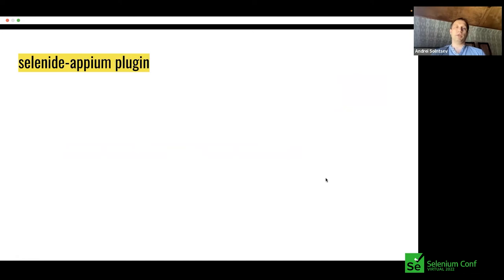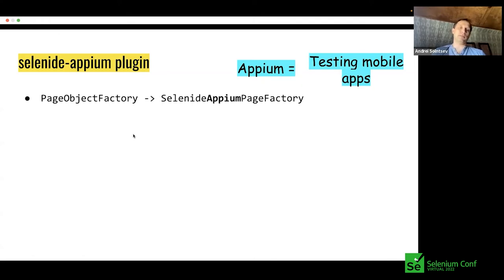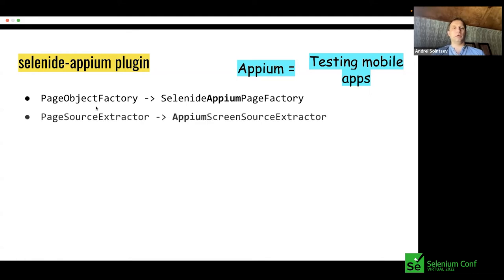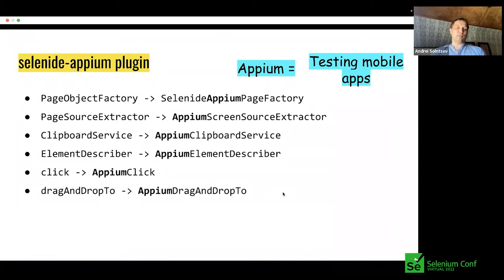Another existing plugin is the Appium plugin. Appium is a framework for writing tests for mobile applications, and it uses the Selenium interface and protocol. So Selenide can be used for testing mobile apps, but we had to override some things — like the default Selenide object factory. Selenide by default saves HTML of the current page on failure, but with Appium it must be XML instead. So we customized the page source extractor. We even had to customize click in Appium to make it more stable and faster.